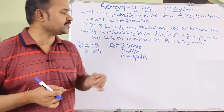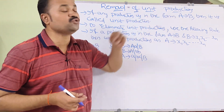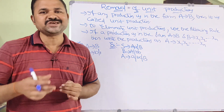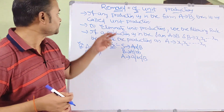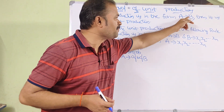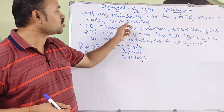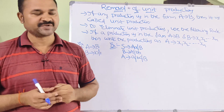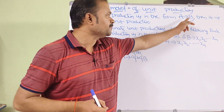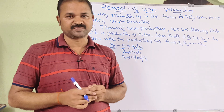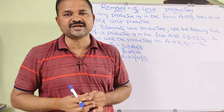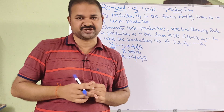Let us discuss the removal of unit productions from context-free grammar. If any production is in the form A implies B, where A is one non-terminal and B is another non-terminal, then it is called a unit production. So if a non-terminal produces another non-terminal, it is called a unit production.